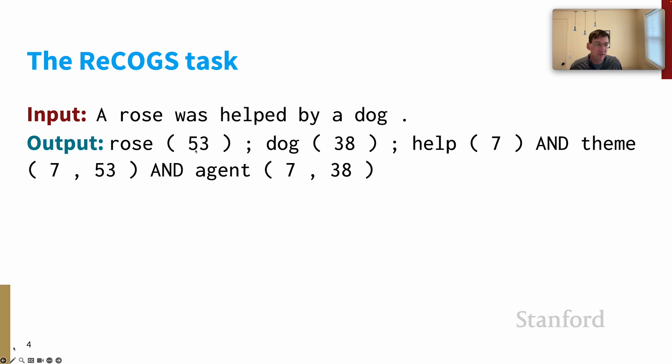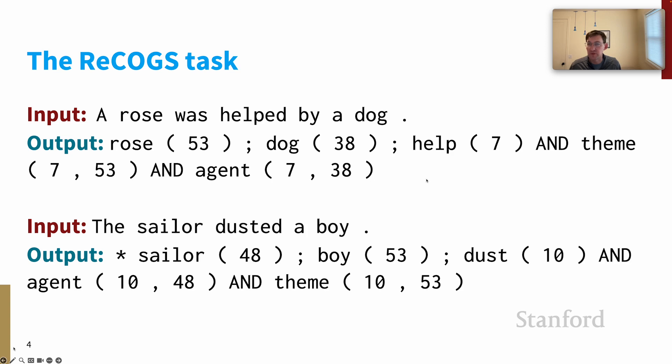We have an indefinite 'a rose', an indefinite 'dog', we have a helping event, the theme of that helping event is the rose, and the agent of that helping event is the dog. Here's a similar example. 'The sailor dusted a boy' and it has an output that looks like this. The new element here is that we have a definite description in the input and that's marked by a star in the output. This is like 'the sailor' here.